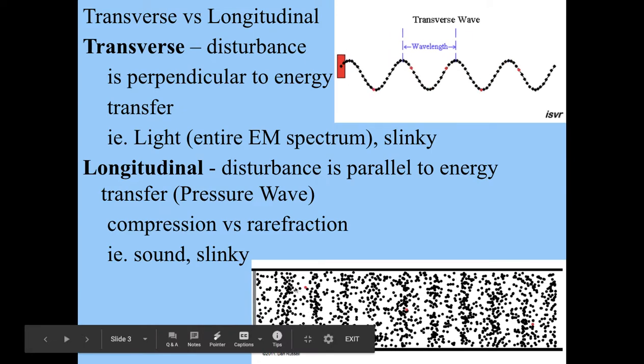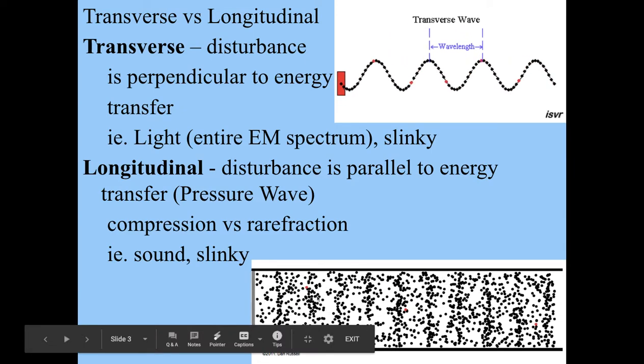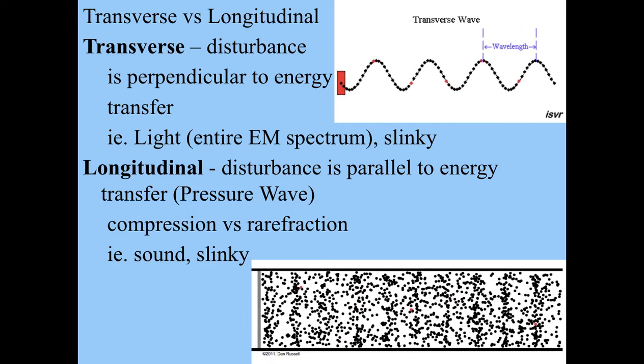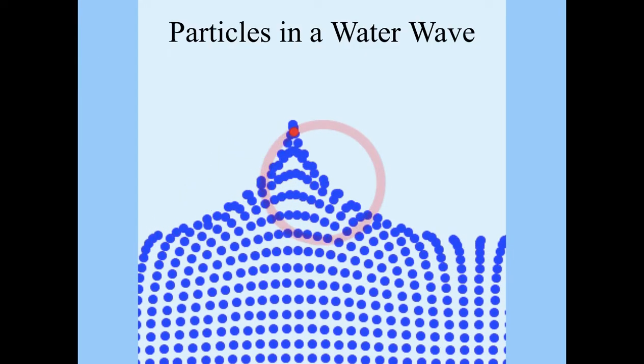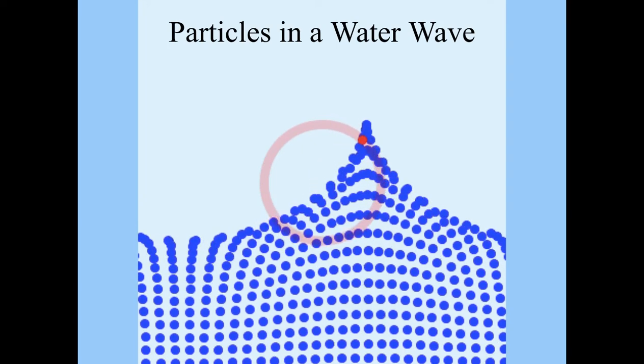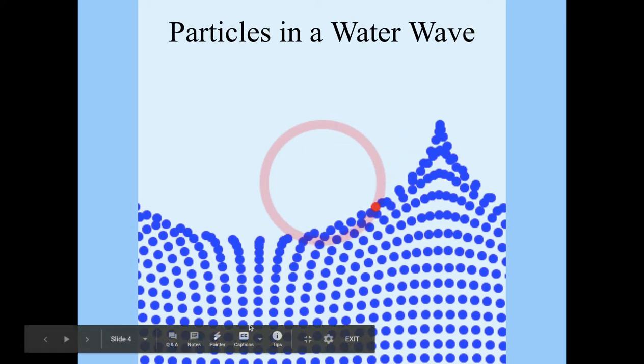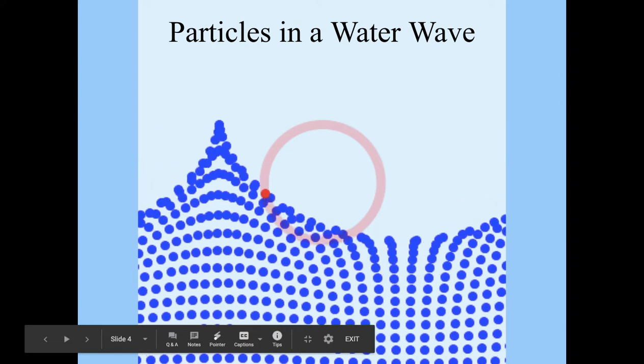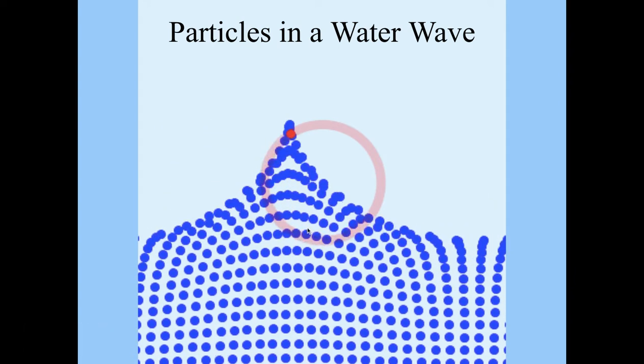The areas where it gets bunched up is an area of compression. The area where it gets spread out is an area of rarefraction. Water waves are actually a little bit of an anomaly, and the particles do both a transverse and a longitudinal manner. So they kind of end up in like a circular wave.